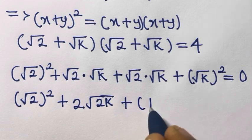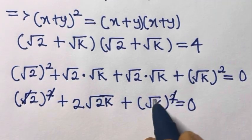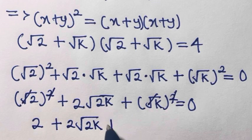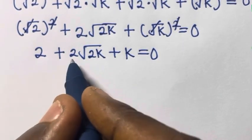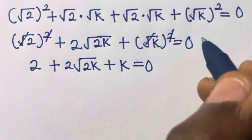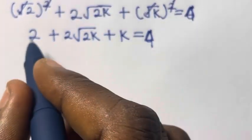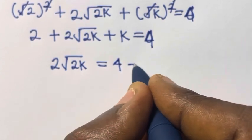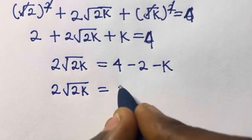The squares cancel the square roots, so we have 2 plus 2 square root of 2k plus k equals 4. There's a correction here — the right side is 4. So transferring the 2 and k to the other side we have: 2 square root of 2k equals 4 minus 2 minus k, which gives us 2 square root of 2k equals 2 minus k.